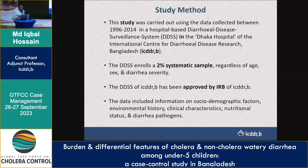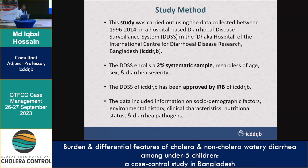This study uses a diarrheal disease systematic surveillance (DDSS) in our hospital. We collect in-depth investigations and information from every 50th patient, representing a 2% sample. The DDSS is approved by our IRB. Data includes socio-demographic factors, environmental history, clinical characteristics, nutritional status, and diarrhea pathogen.